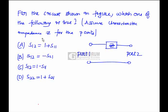Look at this question — he has not given any information about which parameters to find; it is directly represented as S. We have different two-port network parameters: Z, Y, transmission parameters T, T-dash, H, and G parameters. He does not give information regarding which parameter to find — directly represented with S, instead of Z, Y, T, T-dash, H, and G. People think that S represents short circuit or siemens.